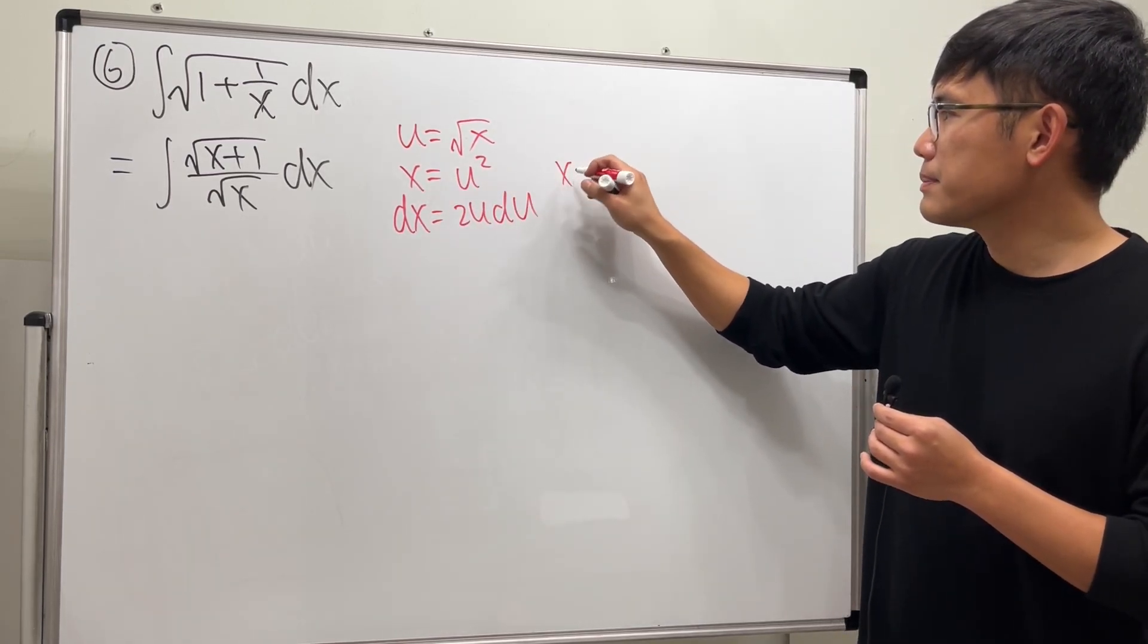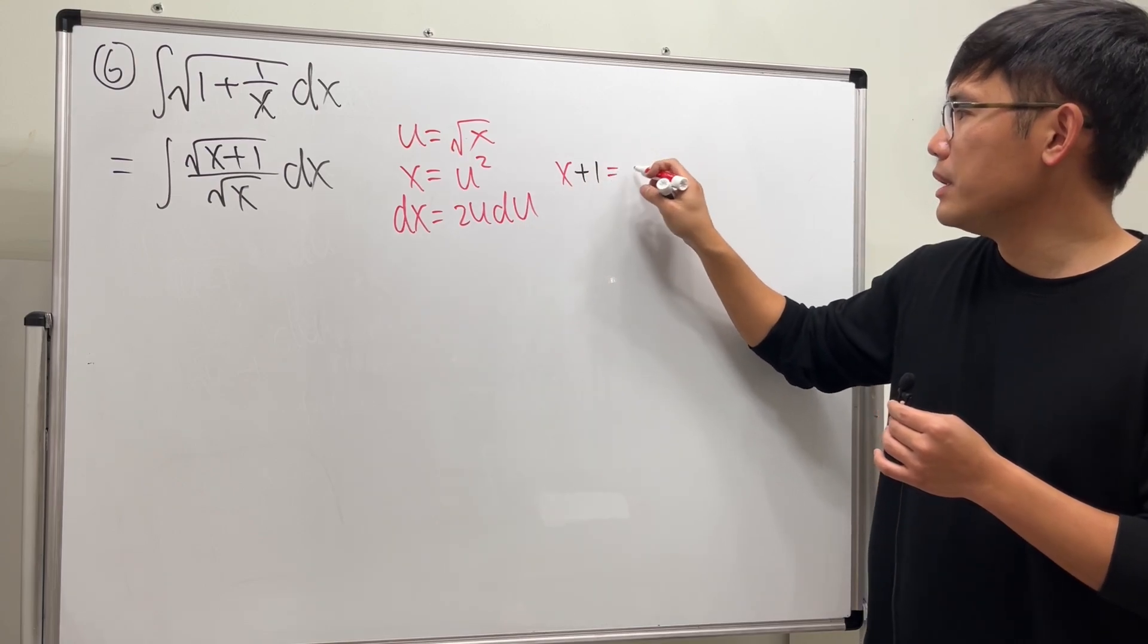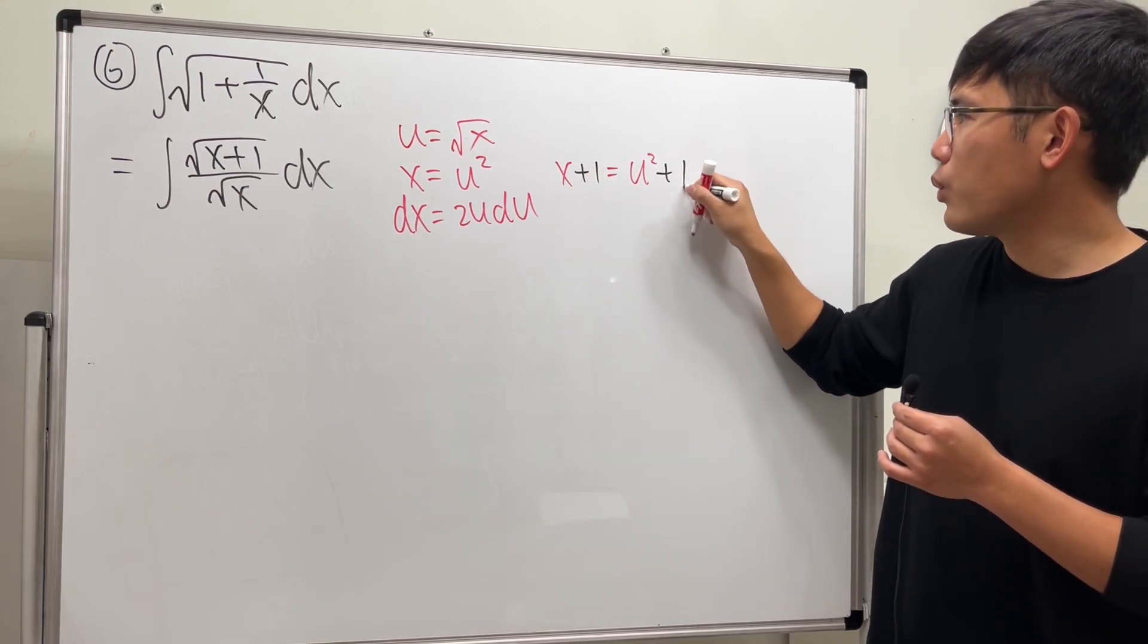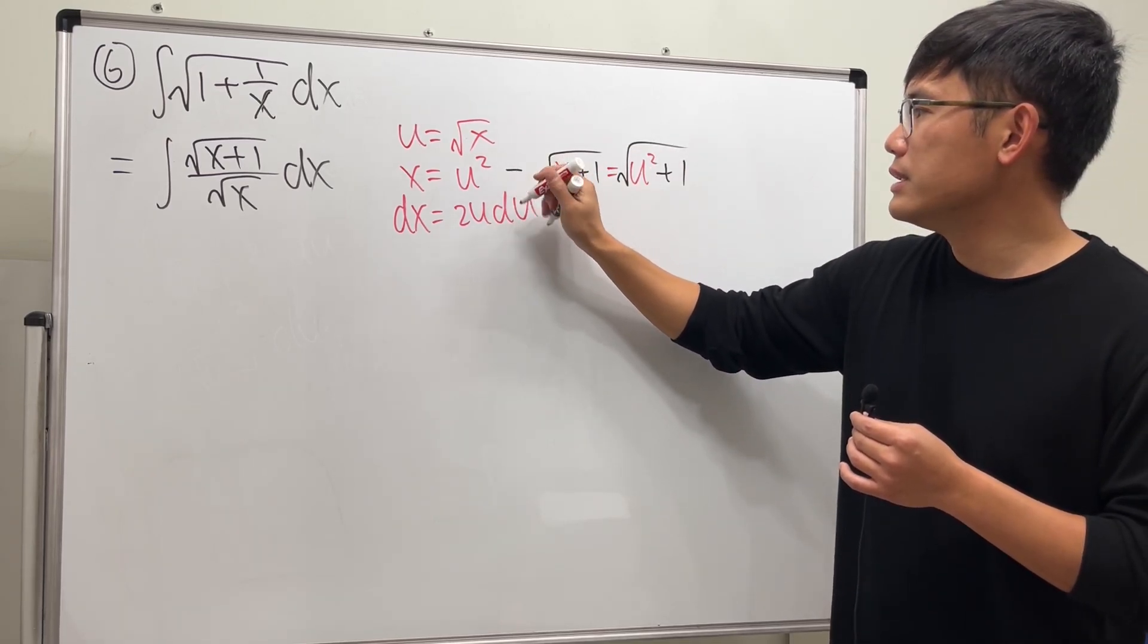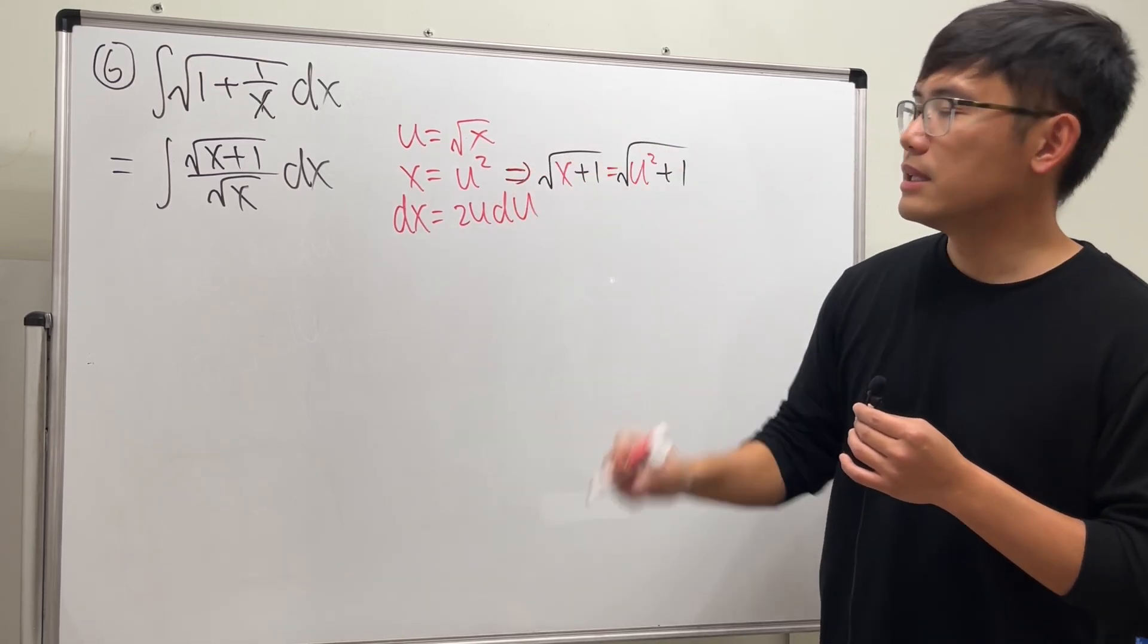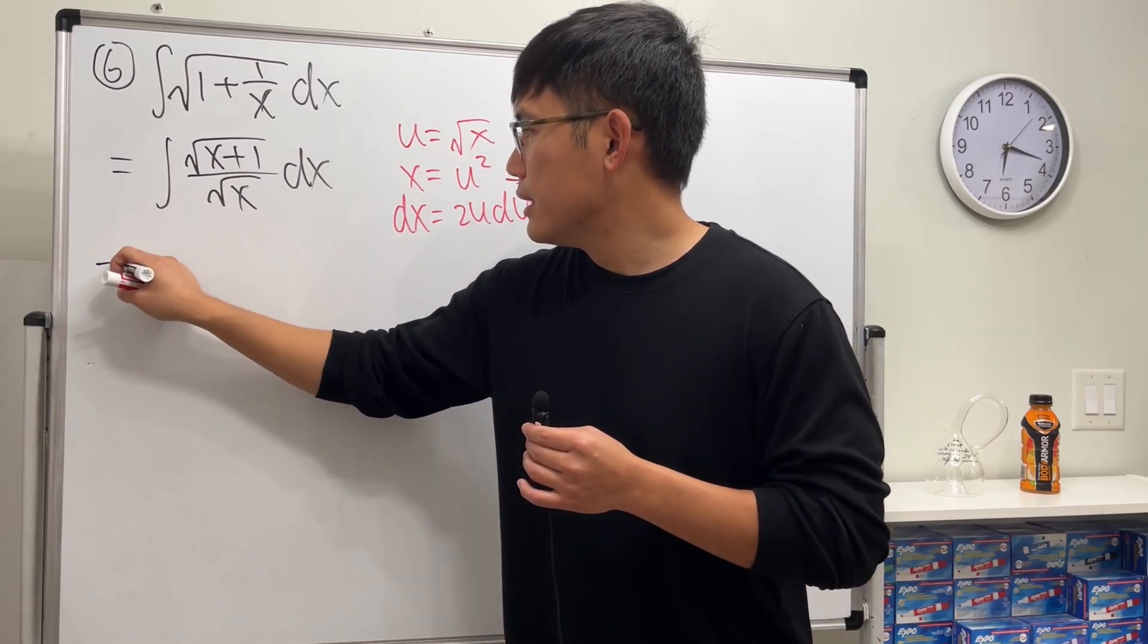And for this right here, x plus 1 will be u squared plus 1, and then we'll just take the square root on both sides. So now we have all these ingredients.